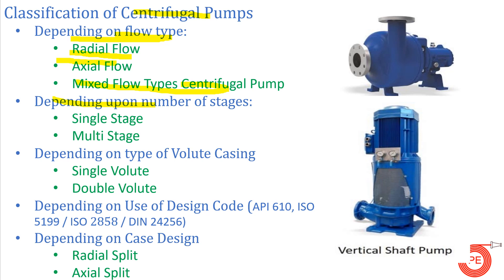Depending upon number of stages — which we'll discuss shortly — there are two types: single stage and multi-stage pumps. Depending upon type of volute casing, there is single volute and double volute casing. Depending upon design code, different countries and companies follow different standards such as API 610, ISO 5199, ISO 2858, and DIN 24256, and pumps are manufactured according to the guidelines in these standards.